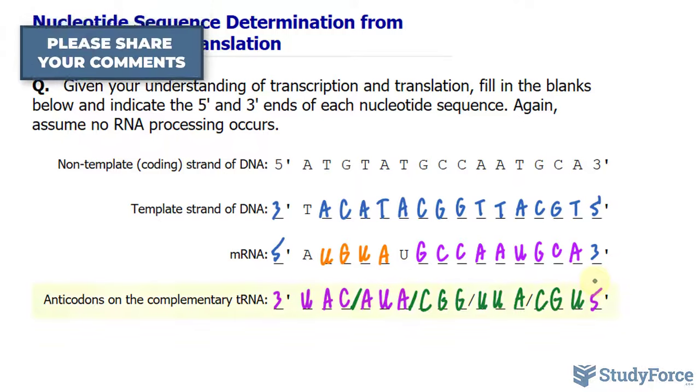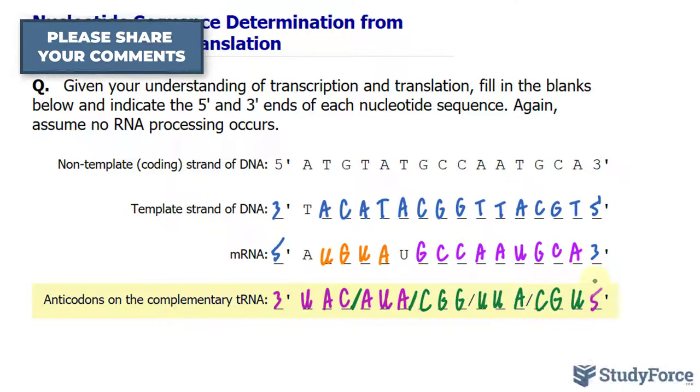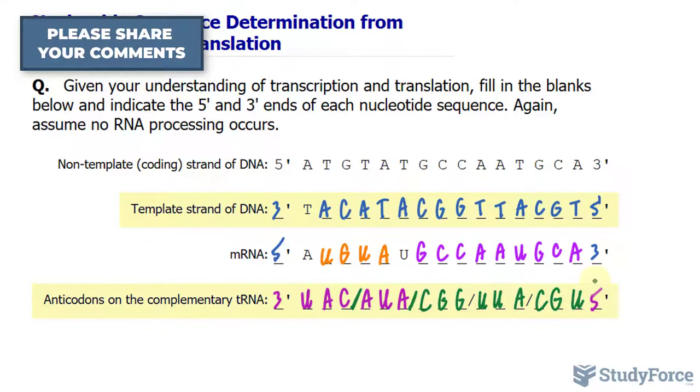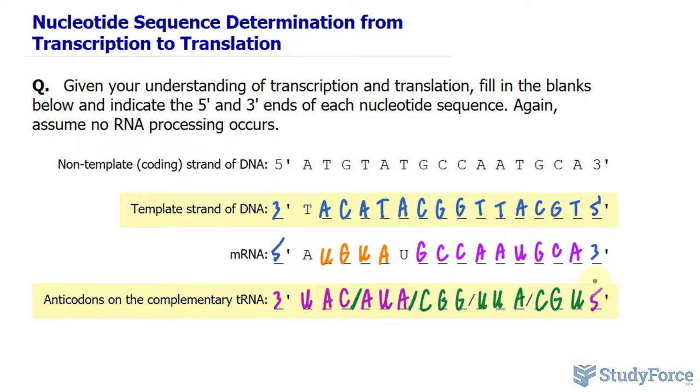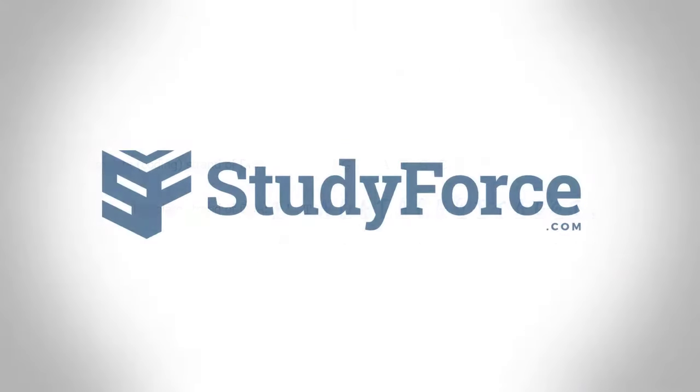Notice how the anticodons on the complementary tRNA strand are identical to the nucleotide sequence of the template strand of DNA with the exception of T being replaced with U. And there you have it. Now you know how to determine the nucleotide sequences for the template strand of DNA, the mRNA, and tRNA anticodon. Thank you for watching.